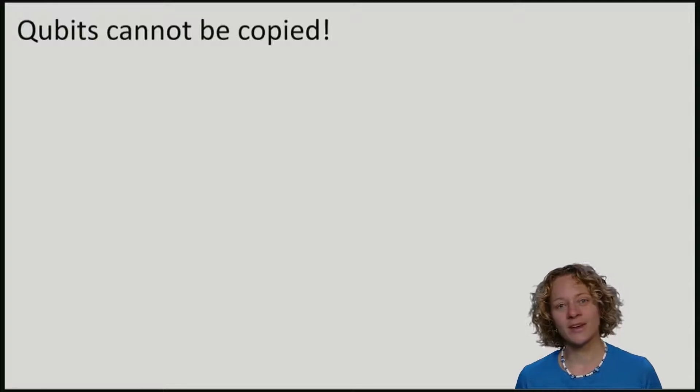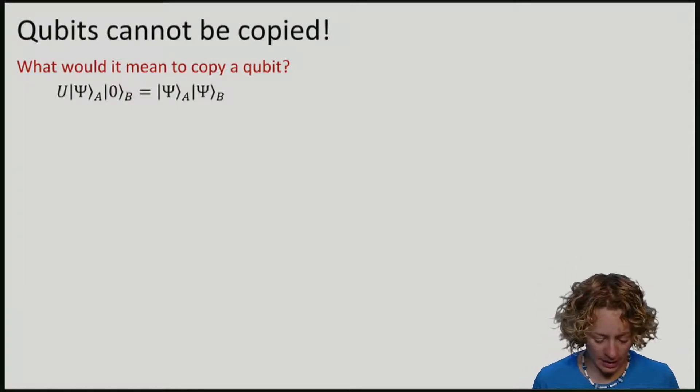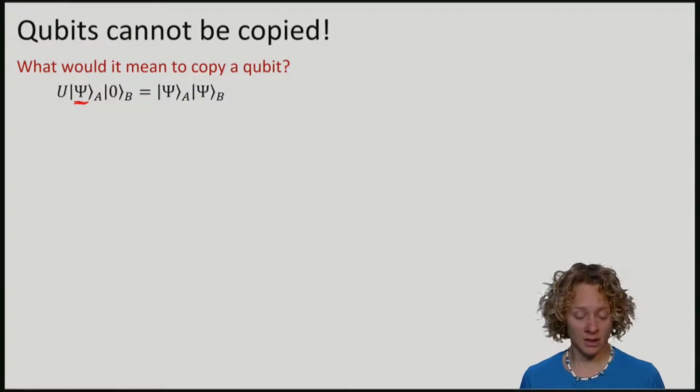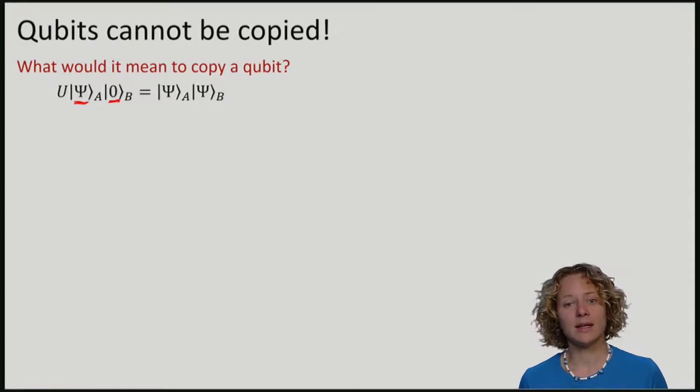To see this, let's consider what it actually means to copy a qubit. If such a copy procedure existed, then there would be a transformation U, a copy transformation, that takes a qubit |Ψ⟩ and an empty register, an empty qubit in the |0⟩ state, and would produce two copies of the state |Ψ⟩.